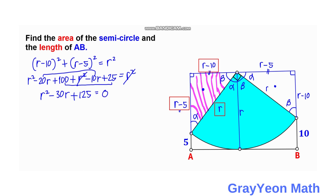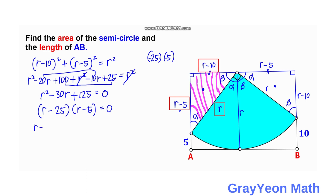We solve this quadratic equation by factoring. The number 125 factors as 25 times 5, and both must be negative so their sum is negative 30 and their product is positive 125. This gives (R − 25)(R − 5) = 0, so R = 25 or R = 5.